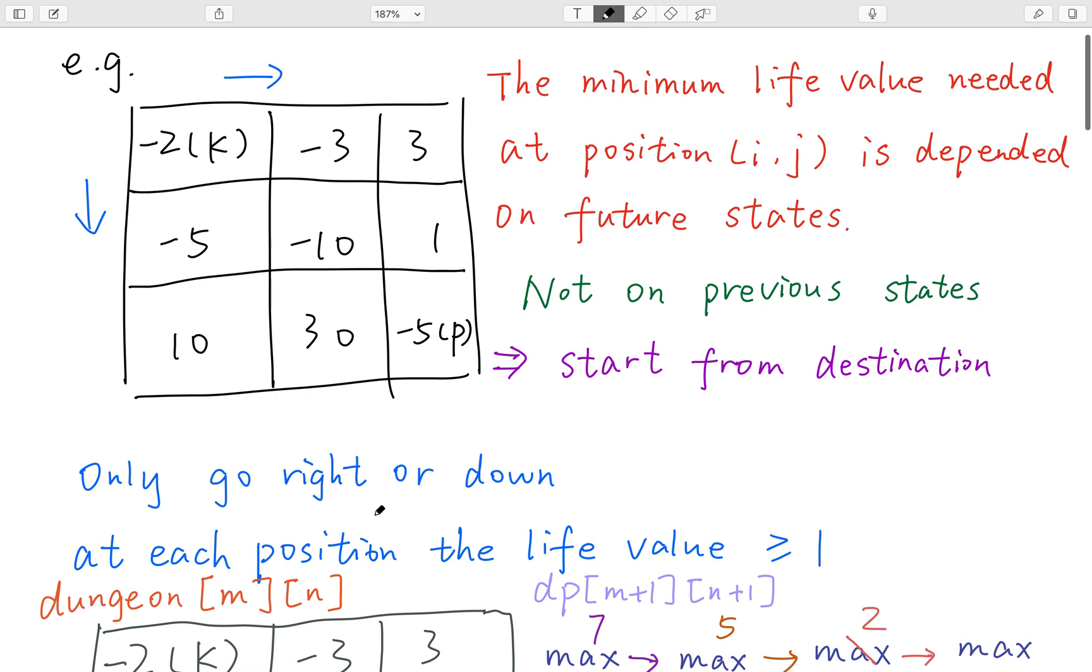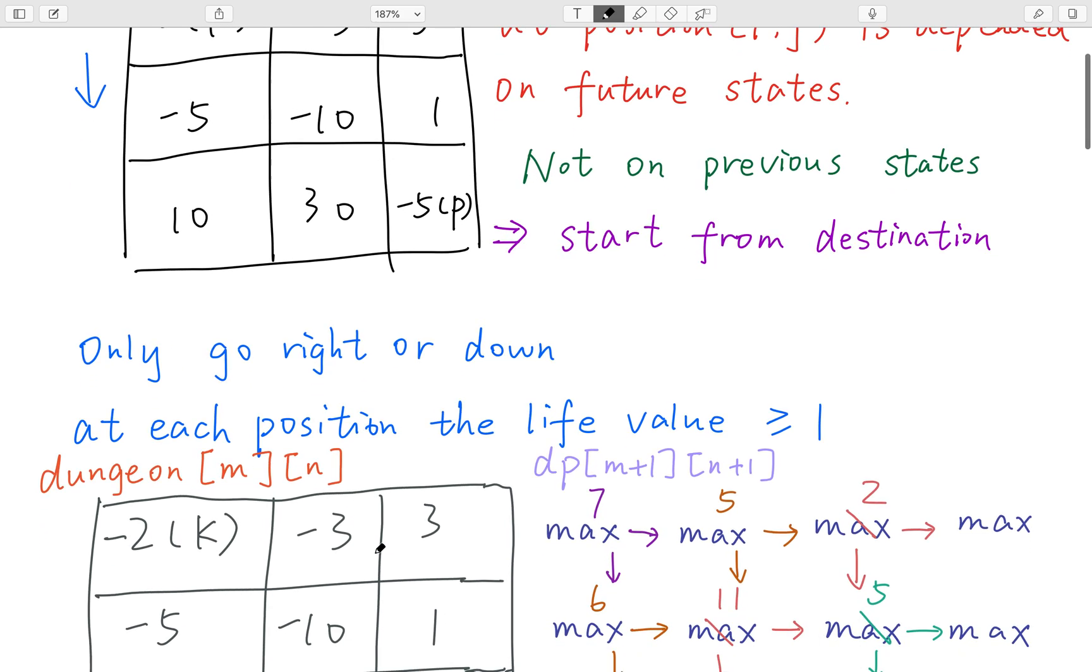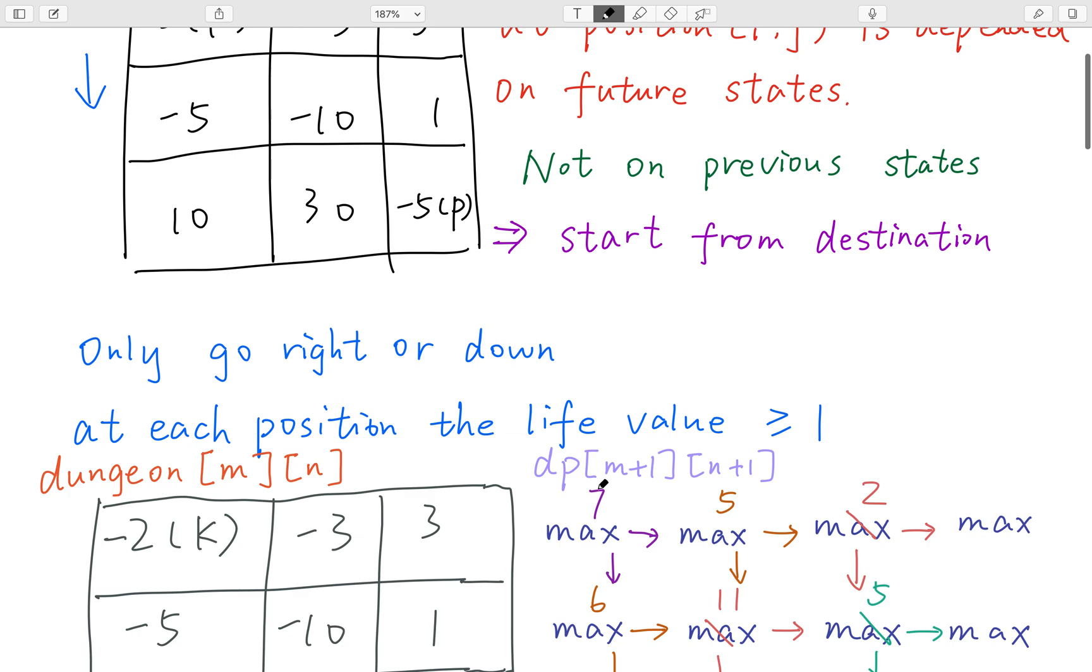So now let's think about the algorithm. We will need a dp array and its size equal to n plus 1 times n plus 1. Why we need a plus 1?